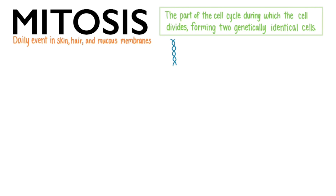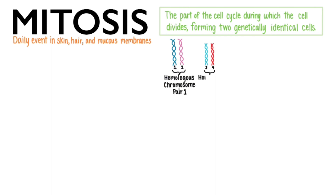Here is one chromosome composed of double-stranded DNA. I've colored it blue to indicate it came from the organism's father. Here is its partner, colored in pink, to show you it came from the organism's mother. Here is another pair of chromosomes. So all together here, I've drawn four chromosomes — homologous chromosome pair 1 and homologous chromosome pair 2.